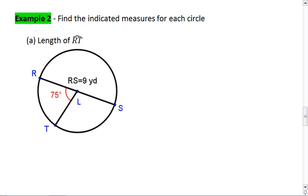In this first one, I want you to find the length of arc RT. So not the degrees, because we already know that's 75, but the length of arc RT. You're given RS is 9 yards and measure of angle RLT is 75.